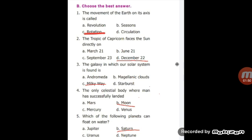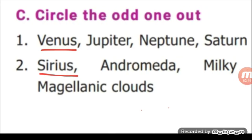The movement of the earth on its axis is called rotation. Next, the tropic of Capricorn faces the sun directly on December 22nd. Next, the galaxy in which our solar system is found is Milky Way galaxy. Next, the only celestial body where man has successfully landed - the answer is Moon. Next, which of the following planets can float on water? The answer is Saturn.